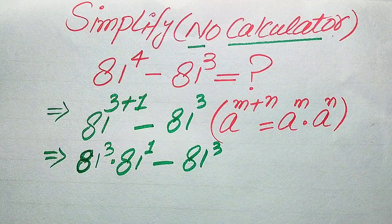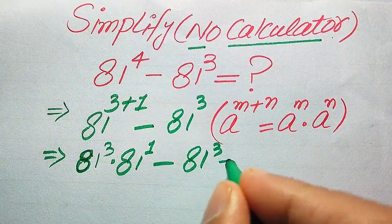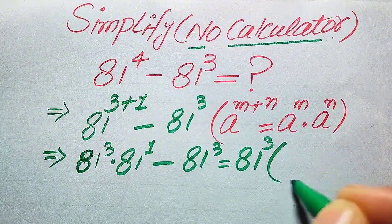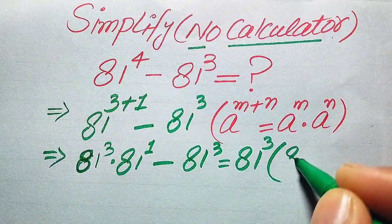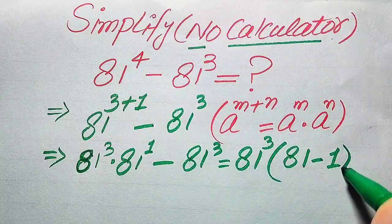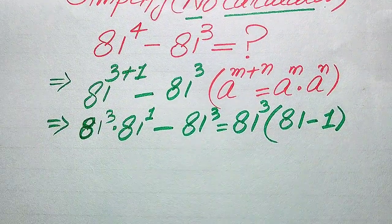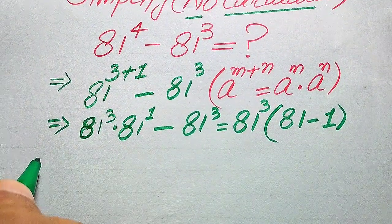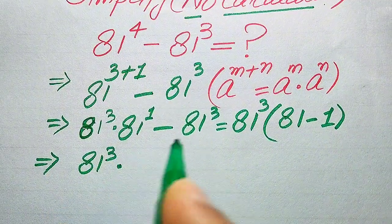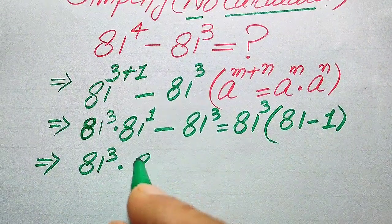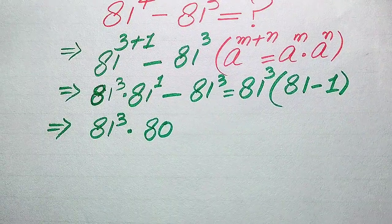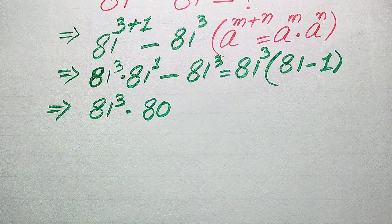Now we take 81 to the power of 3 as a common factor. When we factor it out, the remaining values are 81 minus 1, giving us 81 to the power of 3 multiplied by 80.